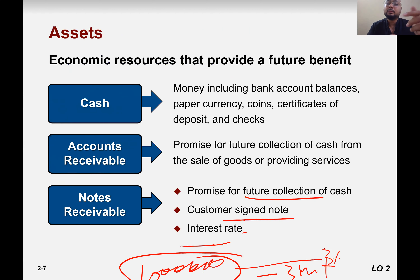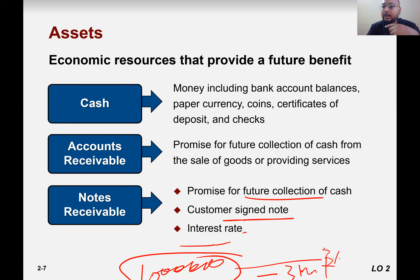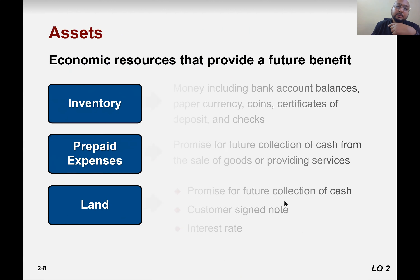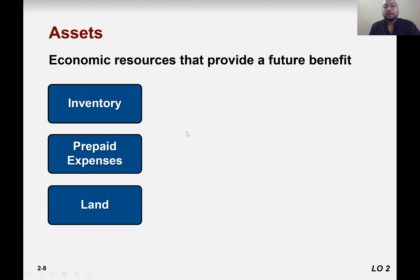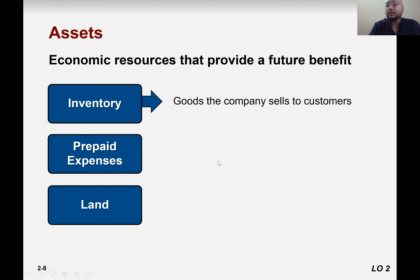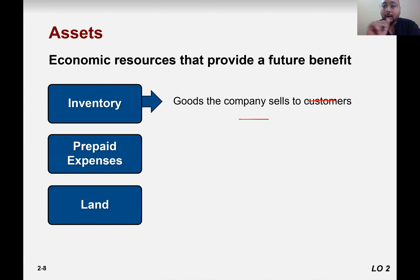You present their contract to them, they take the contract, pay the money, that's it. Other assets — inventory means goods the company sells to customers but not yet sold.